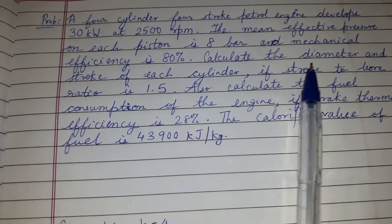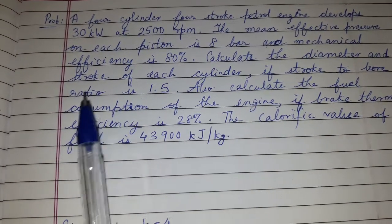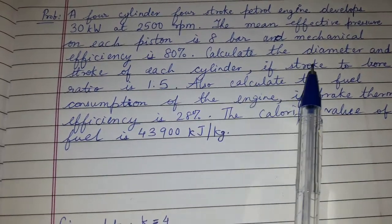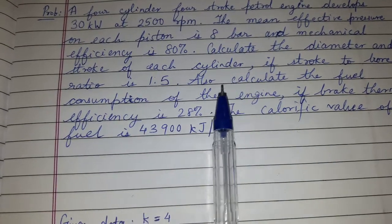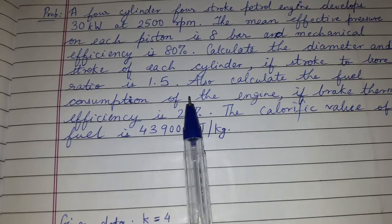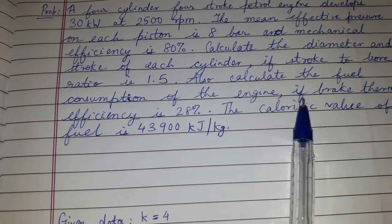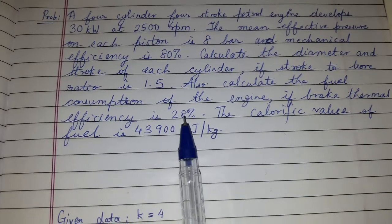Calculate the diameter, that is capital D, and the stroke of each cylinder, that is capital L. If the stroke to bore, stroke to bore means capital L upon D ratio is 1.5, also calculate the fuel consumption of the engine, that is MF. If the brake thermal efficiency is 28 percent.